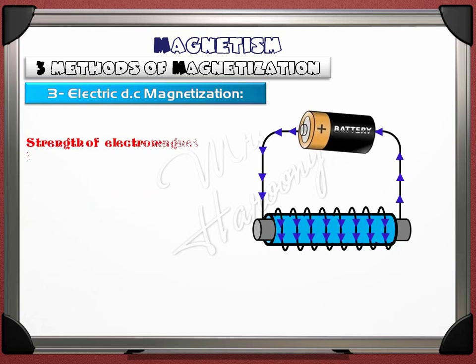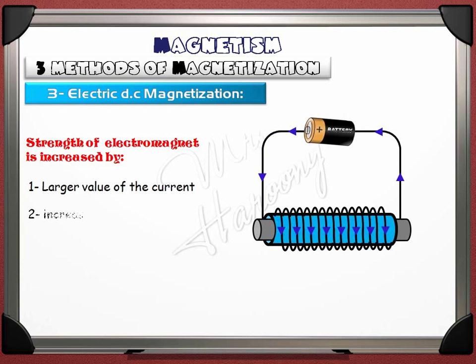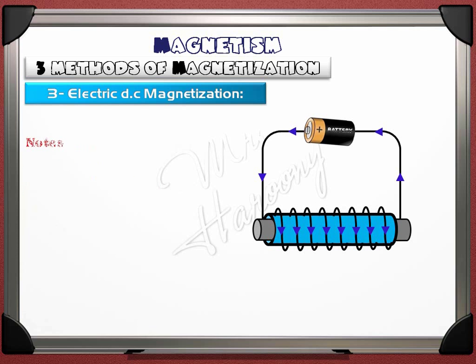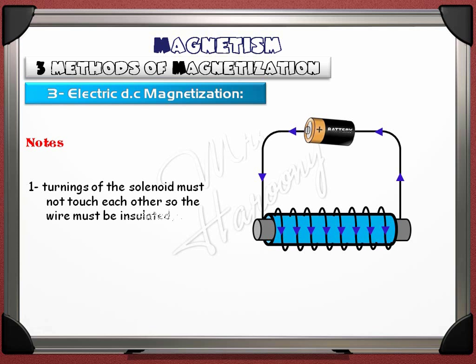The strength of the electromagnet can be increased by: number 1, using a larger value of current; number 2, increasing the number of turns of the solenoid. Important notes: the turns of the solenoid must not touch each other, so the wire must be insulated to avoid a short circuit; and the wire must not touch the rod.